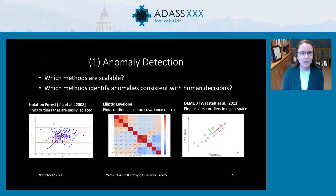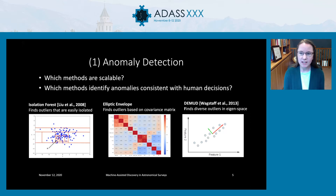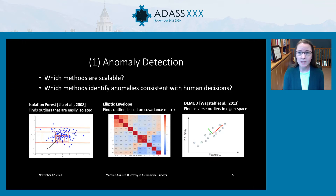For the first step of anomaly detection, there are many methods out there for doing anomaly or outlier detection. Key questions for us are: which methods are scalable — which ones can actually tackle a data set with millions of objects — and which ones identify anomalies that are consistent with what a human would have selected, so that it can be a good proxy for our decision process.